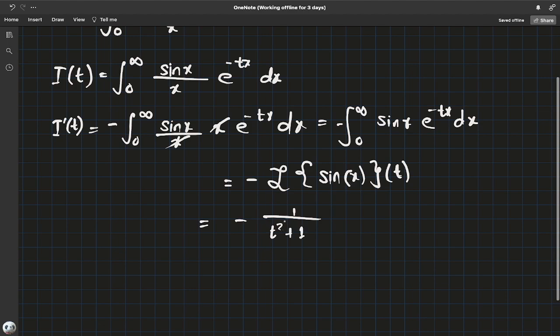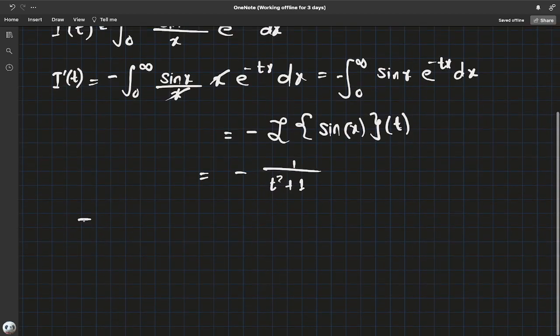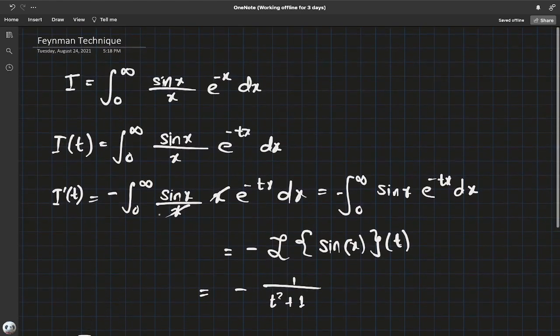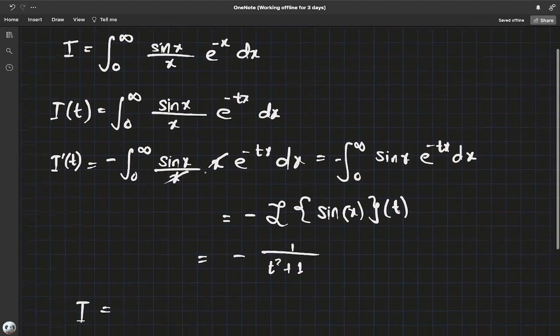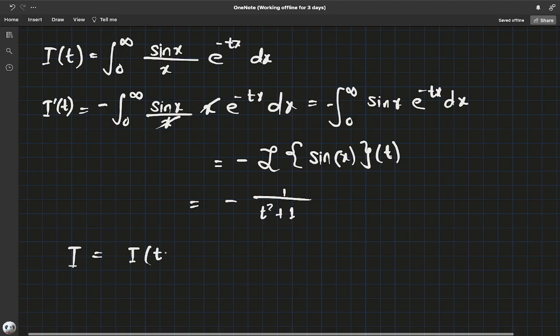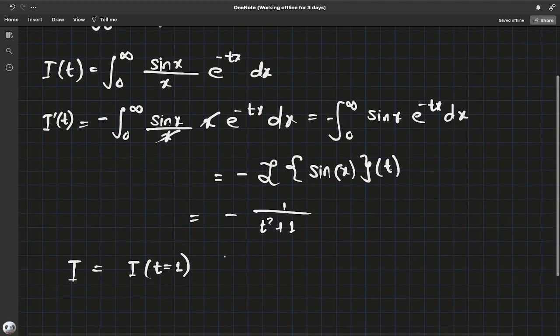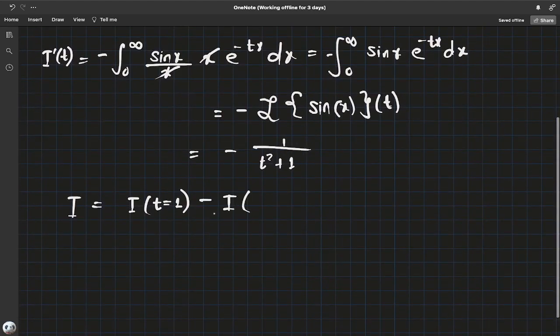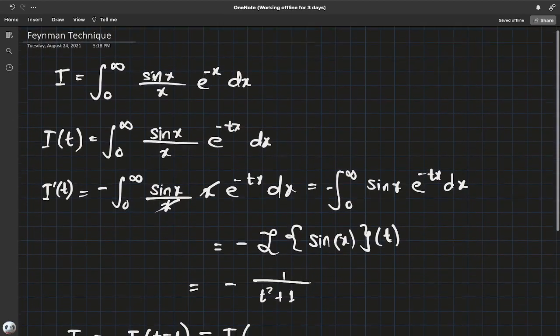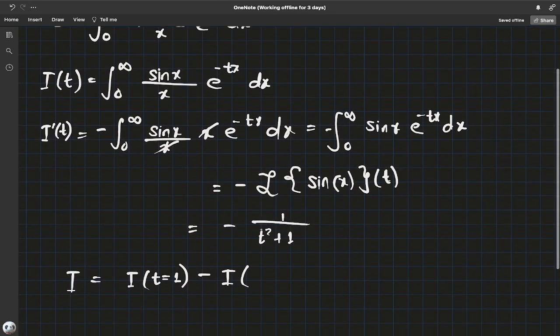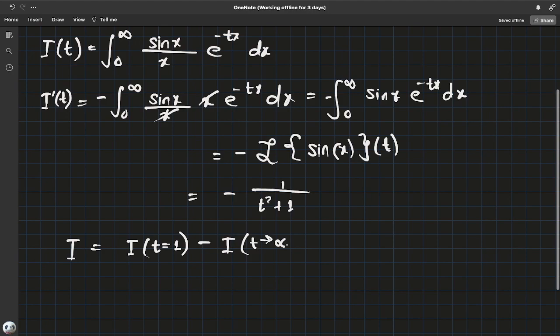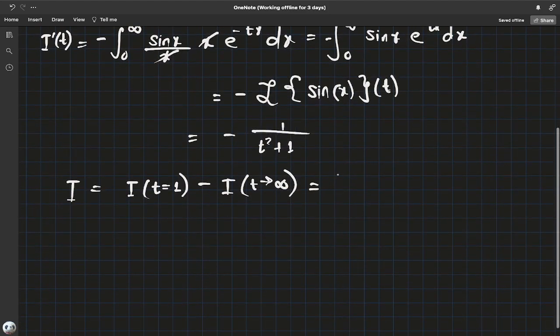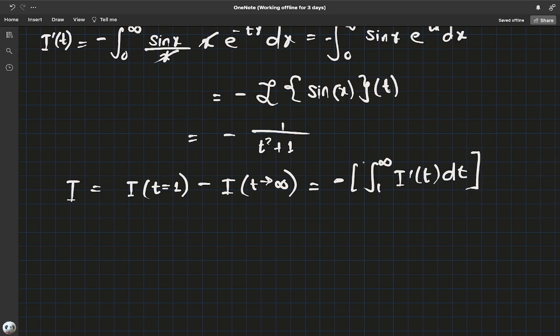Now our integral I is actually I when t equals one minus some value of t where the entire thing is zero as t goes to infinity. To convert this into an integral form by using the fundamental theorem of calculus: negative integral from one to infinity of I'(t) dt. This is just the fundamental theorem of calculus in play.